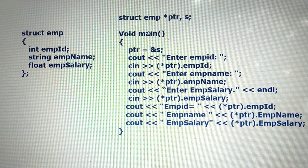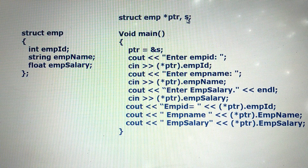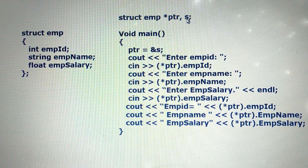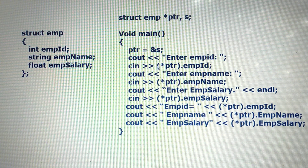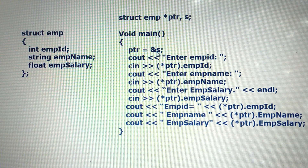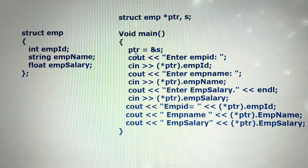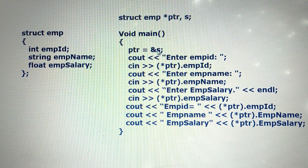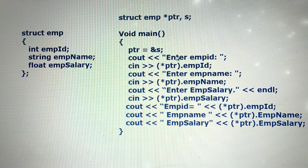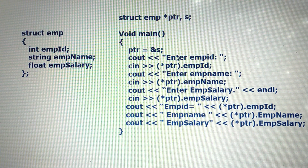This declaration is global — the pointer variable is also global and the object is also global. Then the main program starts. Assign the address of the object to the pointer variable: PTR is equal to address-of s.